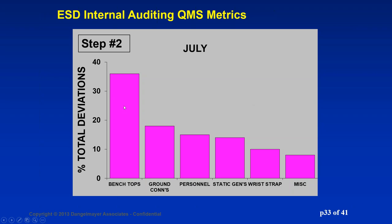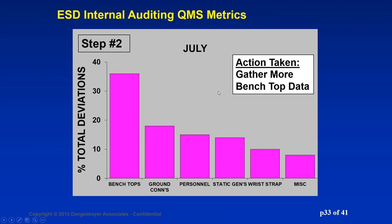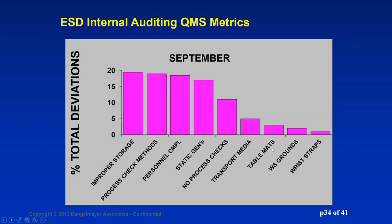The next step is to look at the next biggest problem — bench tops, which were now up in the 35% range of total findings. I found the standard QMS metrics did not have enough information, so I added some additional data points for the auditor to gather. With that information, we found the root cause of these failures: it was hardware related, and we were able to redesign the hardware so they would not break going forward. You can see now the wrist straps are even better, and the table mats or benches are down in the noise. This is classic quality tracking metrics and root cause analysis, and doing it systematically with a Pareto format enables it to be much more effective.